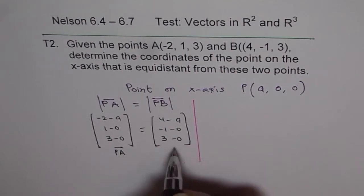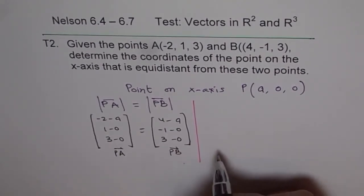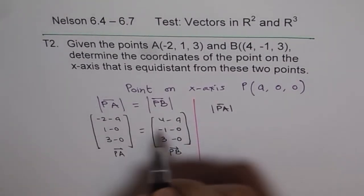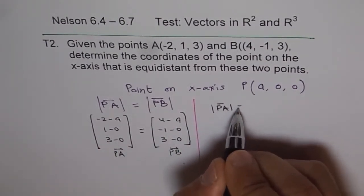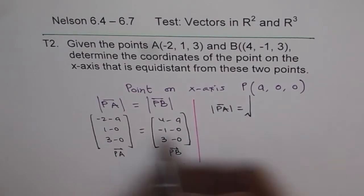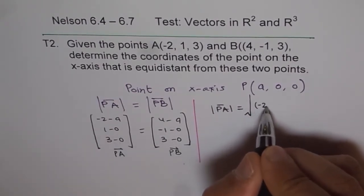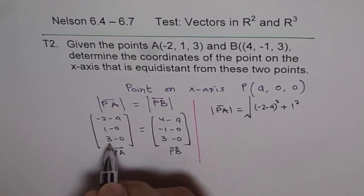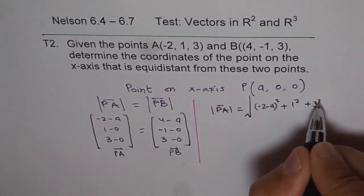And this is vector PB. And their magnitudes are, what is magnitude of PA? Magnitude of PA is equal to square root of, minus 2 minus A whole square, plus 1 square, plus 3 square.